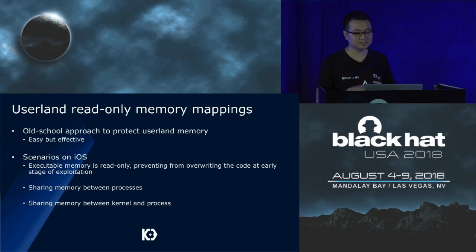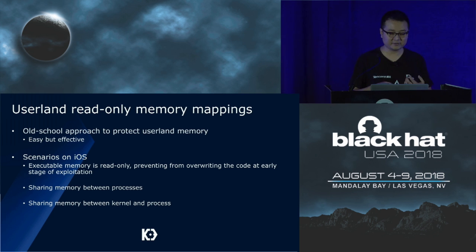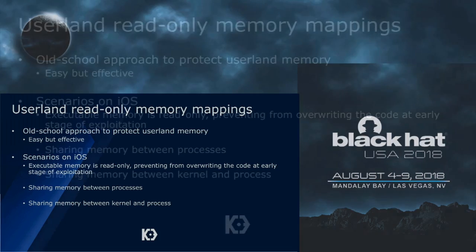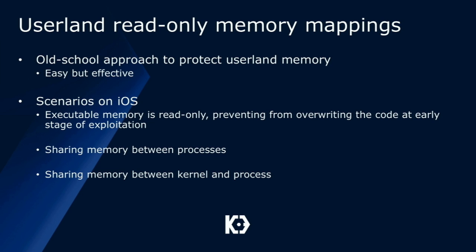Among those memory protection mechanisms, user land read-only mapping is a very old-school approach to protect user land memory — easily implemented but very effective. There are three major scenarios. First, executable memory in iOS is read-only to prevent attackers from overwriting code at the early stage of exploitation. Along with mitigations like code signing enforcement, this has made iOS very strong in security. Second is memory sharing between processes — two processes share one physical copy of memory. Third is memory sharing between the kernel and a process.